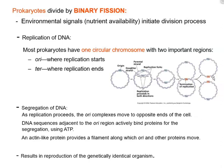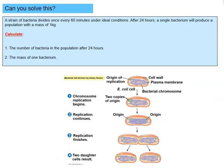One DNA molecule will go to one cell, and the other will go to the other cell. The segregation or separation of DNA is carried out by certain proteins: motor proteins and actin-like proteins that provide filaments, allowing the DNA and other cellular structures to be moved to separate cells. The end result of binary fission is genetically identical bacterial cells.